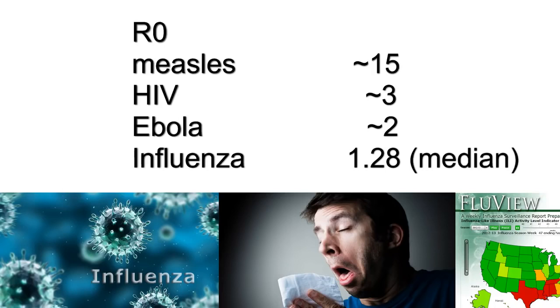The R sub-zero for influenza varies somewhat from year to year. The highly infectious 1918 pandemic strain had an R sub-zero of 2.9, but the median over recorded history is about 1.28.